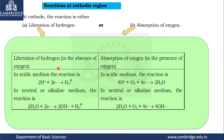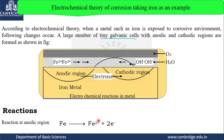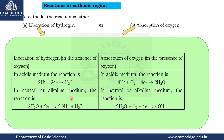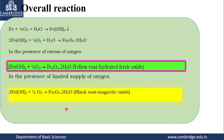The second type is absorption of oxygen. If the cathodic region has a sufficient amount of oxygen, reactions will also occur in acidic or neutral media. In an acidic medium with excess oxygen, the electrons released from the anodic region are taken up by oxygen to become water molecules. In a neutral medium, electrons and oxygen form OH⁻ ions. The Fe²⁺ ions formed at the anodic region and the OH⁻ ions formed at the cathodic side combine to give Fe(OH)₂.